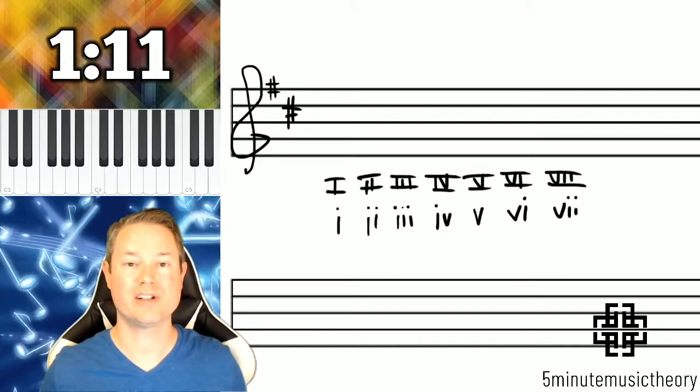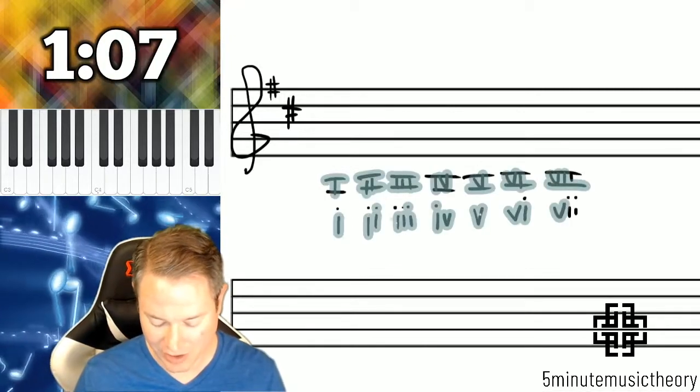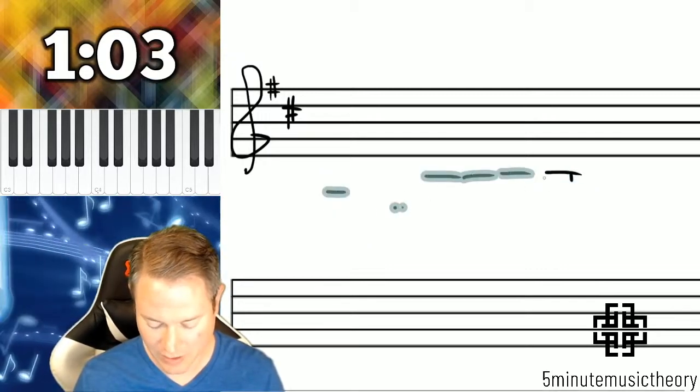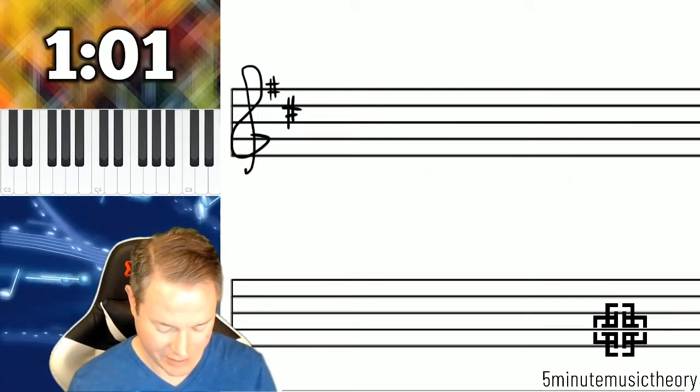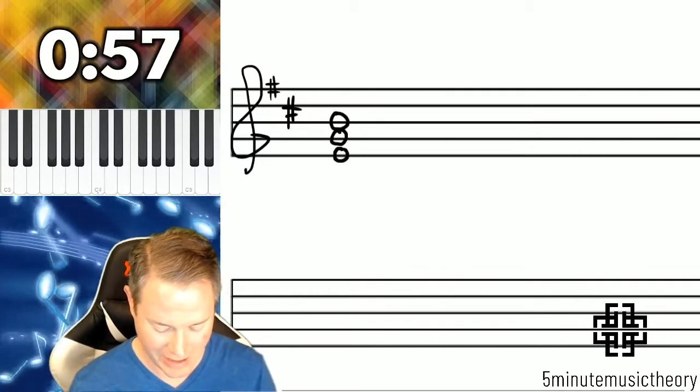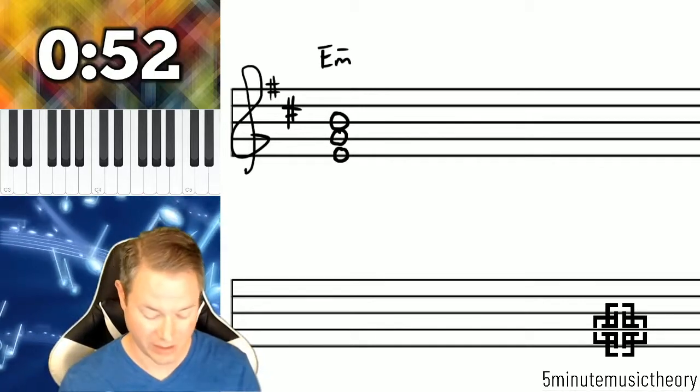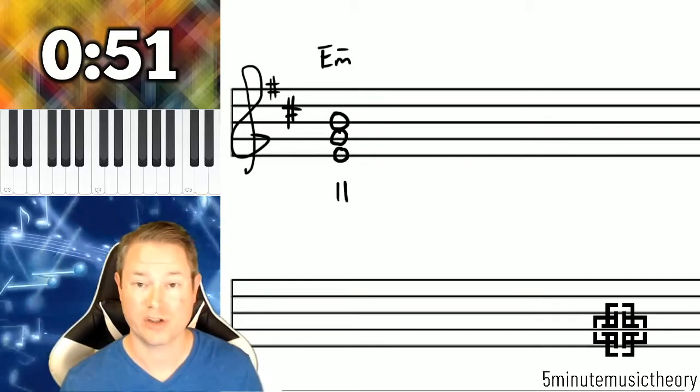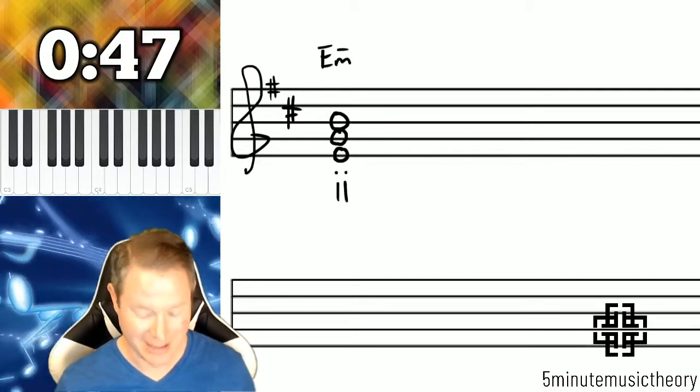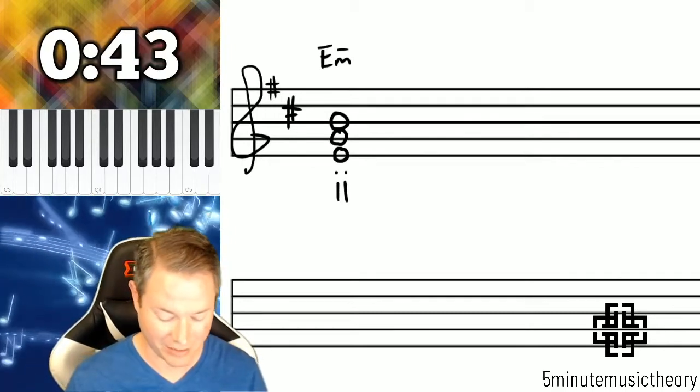So if the Roman numeral is in lowercase, that means that it's a minor triad. So let me show you an example of when we would use a lowercase symbol or Roman numeral here. I'll take the same E. I'll just do a different chord. This is an E minor chord. E is the second scale degree. So it's going to be a Roman numeral two. And because it's a minor triad, we're going to put that in lowercase. So that means this is a minor triad built from the second scale degree.